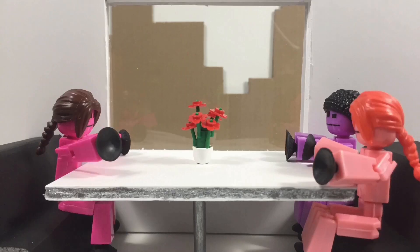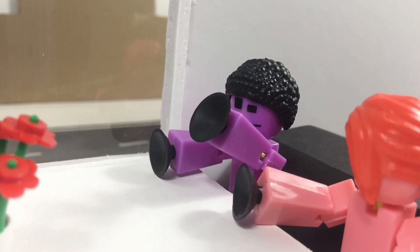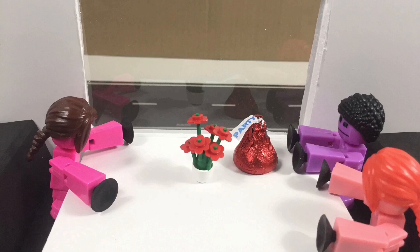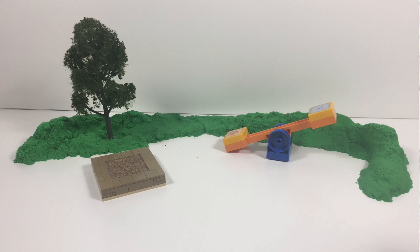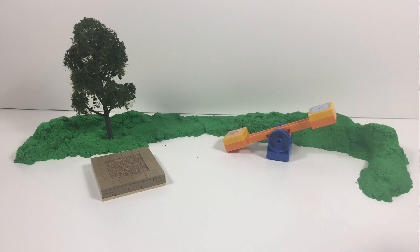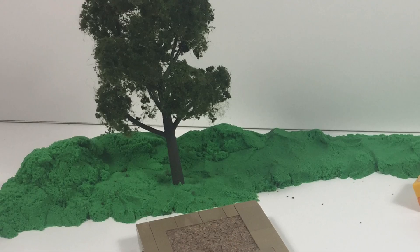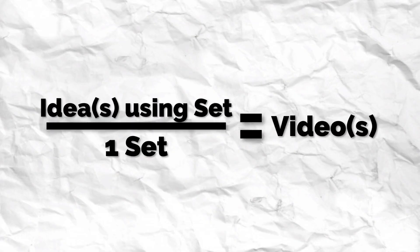Luckily, future-proofing comes in handy again, because once you build a set, you've pretty much got that set forever and you can use it as many times as you need to. So this is why it's important that when you build your sets, they have lots of details and other little things that could be used for a future video. Take this playground set for instance — I only made it for a dumb gag for one video, but then I realized I put a lot of stuff in here that I could use for other videos. It's got a seesaw and a sandbox. Could these be used for other videos? What about this tree — could that be used for anything? It's all about making the most out of your sets to compensate for the time it took to make them.